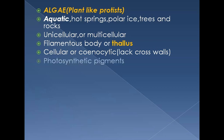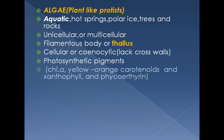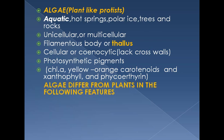Algae may be cellular or coenocytic. Photosynthetic pigments found in algae include chlorophyll a, yellow-orange carotenoids, xanthophylls, and phycoerythrin — the red pigment. Algae differ from plants in the following features — remember this is a very important statement that may be asked in exams including board exams.